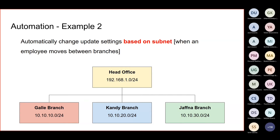The head office server has a component called HTTP proxy, which will talk to ESET servers. If there is an update available, it will be downloaded to the ESET server, and all the machines on the head office LAN will request the update from this head office server — not from the internet.